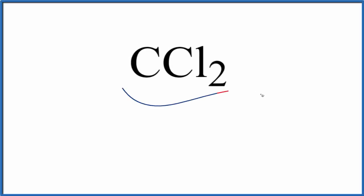Let's write the Lewis structure for CCl2. This is called dichlorocarbene, and it's never been isolated. This is a reactive intermediate—something that takes place between reactions. It's useful to understand the Lewis structure to understand the reactivity.